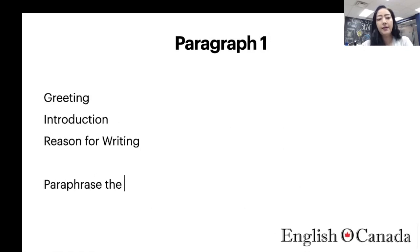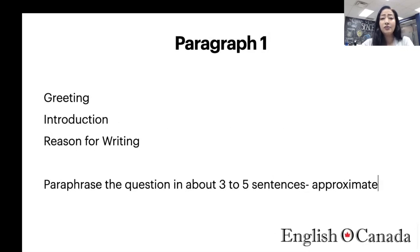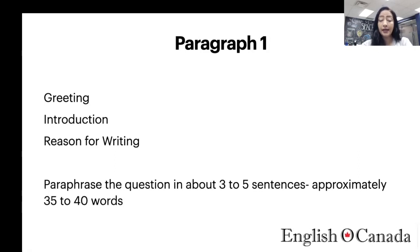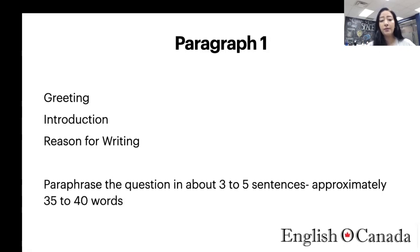Paragraph one starts with a greeting. If you're writing to a friend you can say 'Hey Matt,' 'Hi Sandra,' or 'Hello Michael.' For a formal letter, it's best to say 'Dear Mr. Whoever.' Then introduce yourself if it's a formal letter — in an informal letter you don't need an introduction. Also mention the reason for writing. This paragraph should not exceed 35 to 40 words, about three to five sentences maximum.